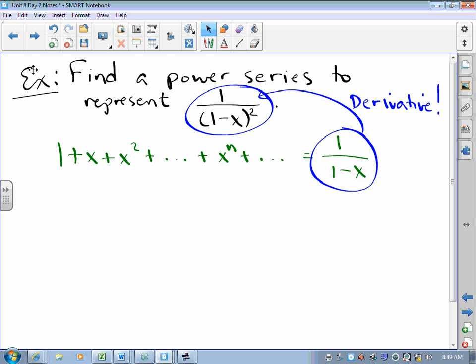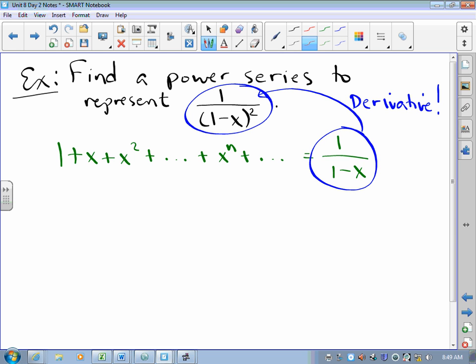Oh man. So if the derivative of this function is that function, then to get one over (1 - x) squared, to get a power series that represents it, I just take the derivative of this long polynomial term by term.